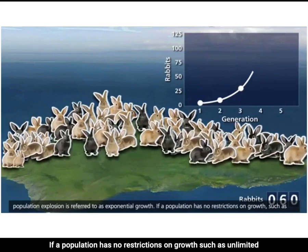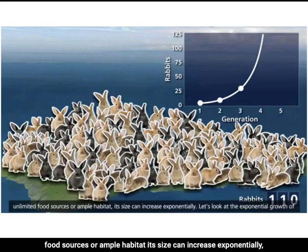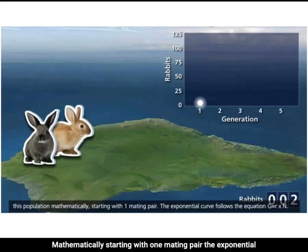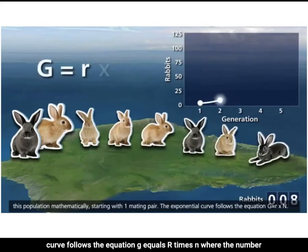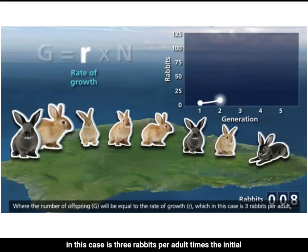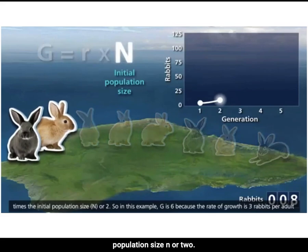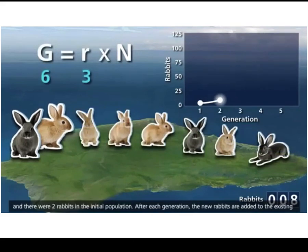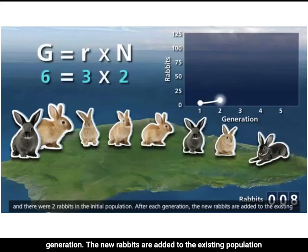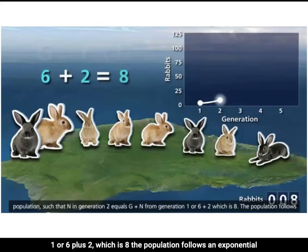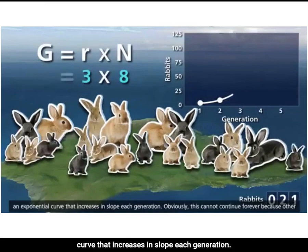If a population has no restrictions on growth, such as unlimited food or ample habitat, its size can increase exponentially. The exponential growth equation is: G = r × N, where G is the number of offspring, r is the rate of growth (in this case three rabbits per adult), and N is the initial population size. So G equals six for an initial population of two. After each generation, new rabbits are added: N in generation two equals G plus N from generation one, or six plus two equals eight. The population follows an exponential curve that increases in slope each generation.